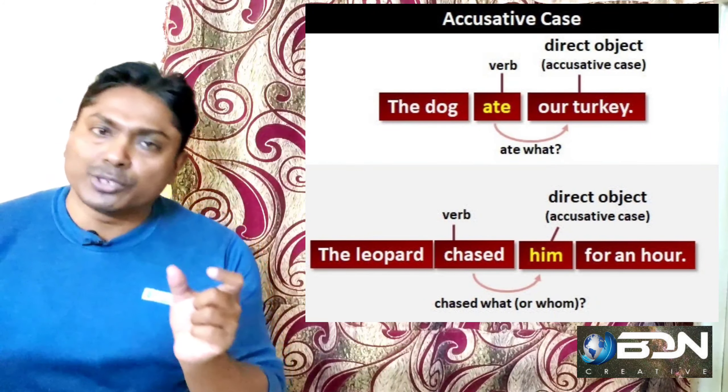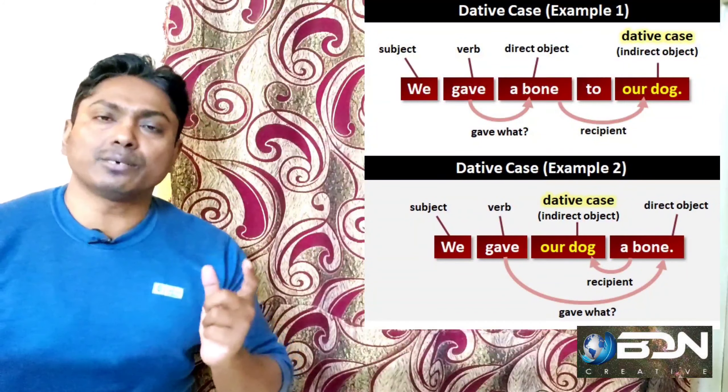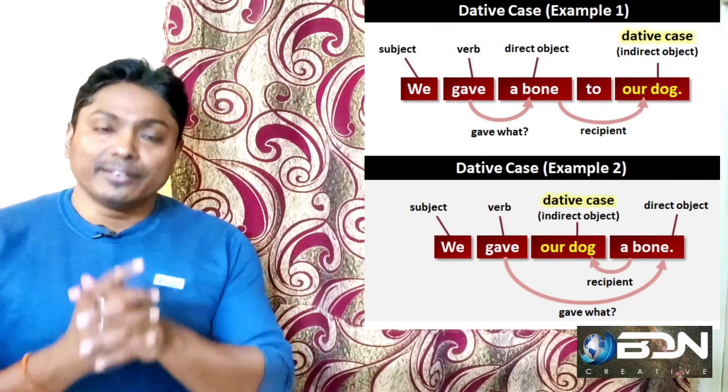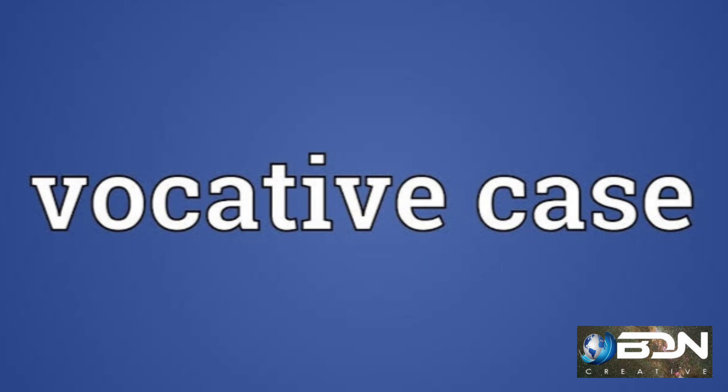Direct Object and Indirect Object fall under the Objective case. What is a Direct Object? For example: 'He beats the drum.' The drum is affected by the verb 'beat.' So, these objects are called Direct Objects.